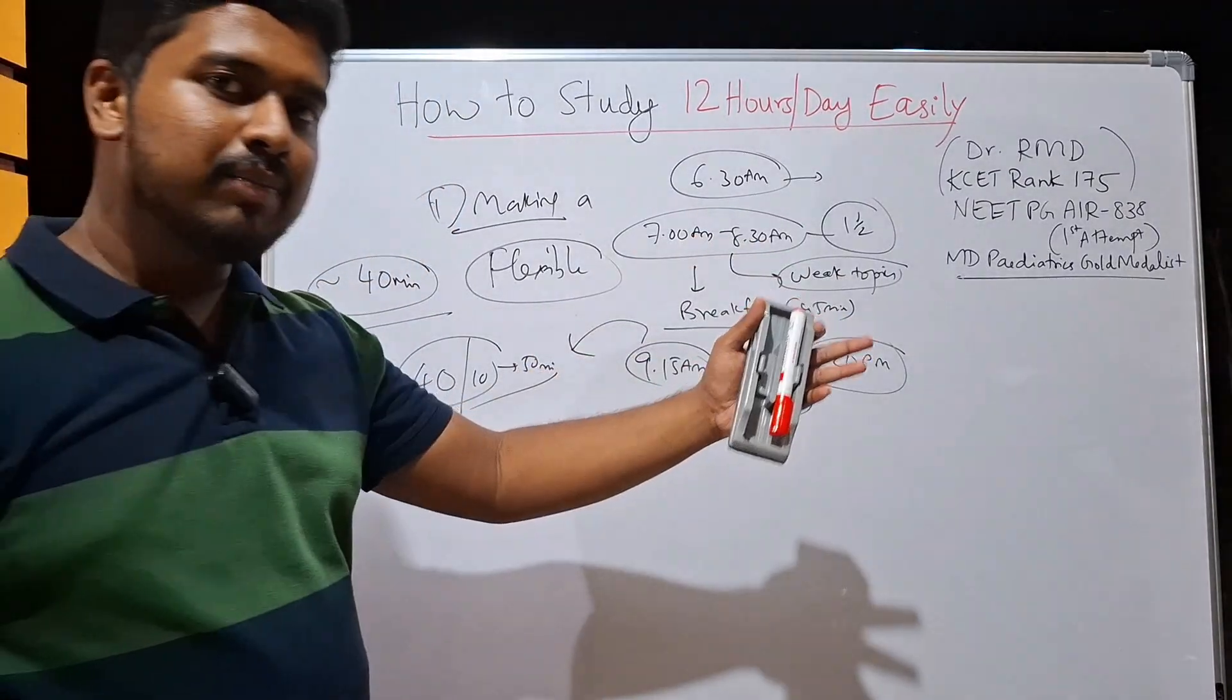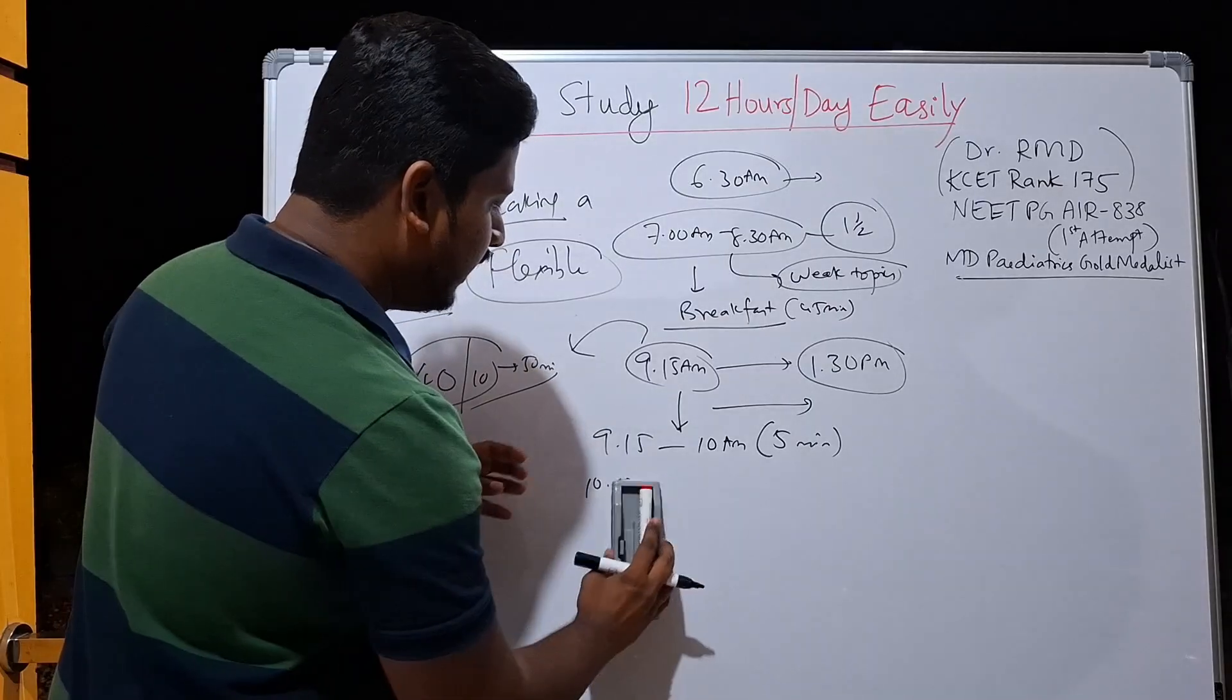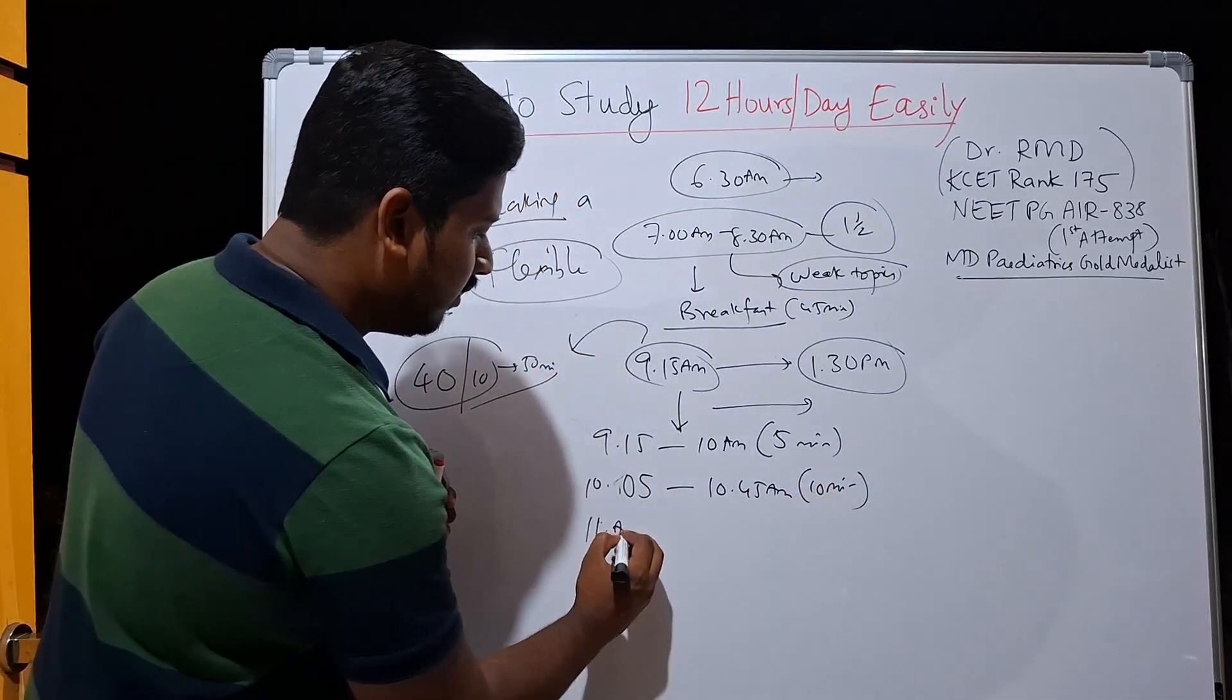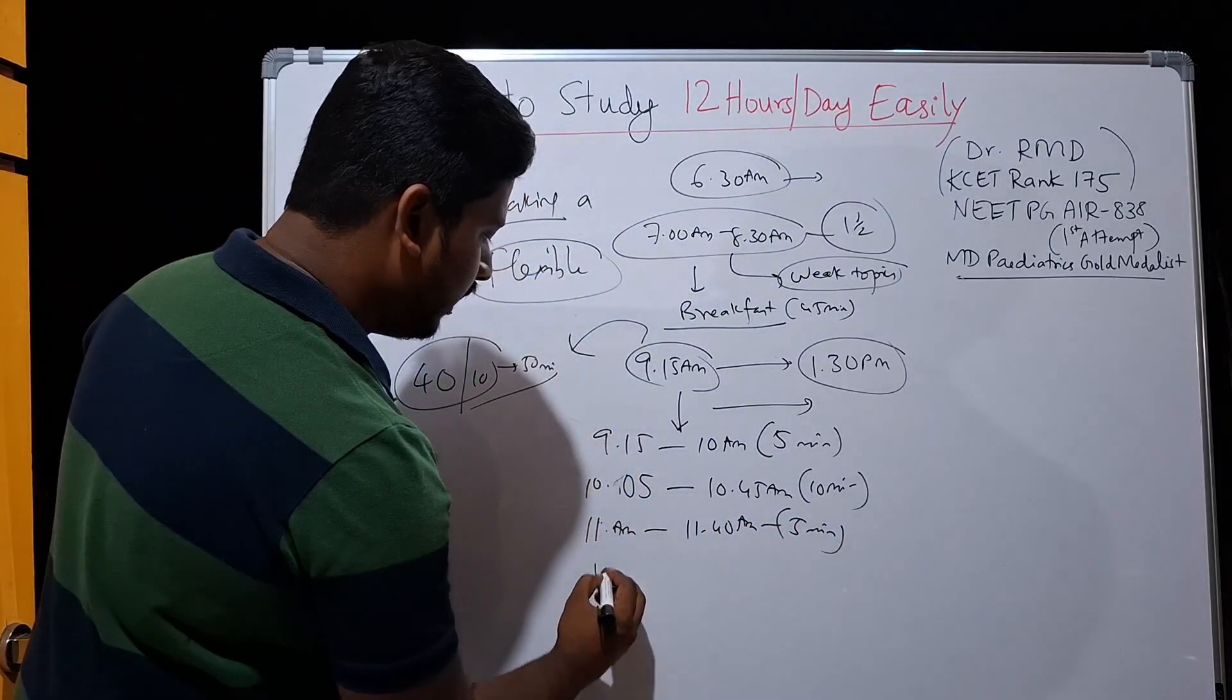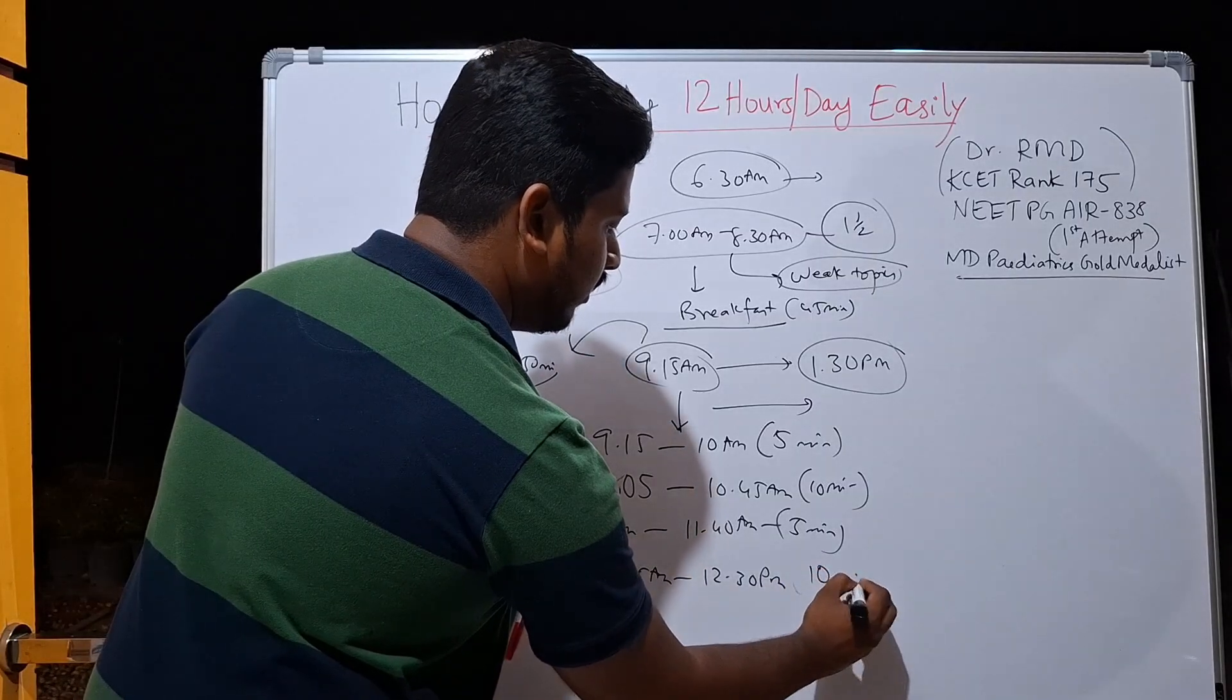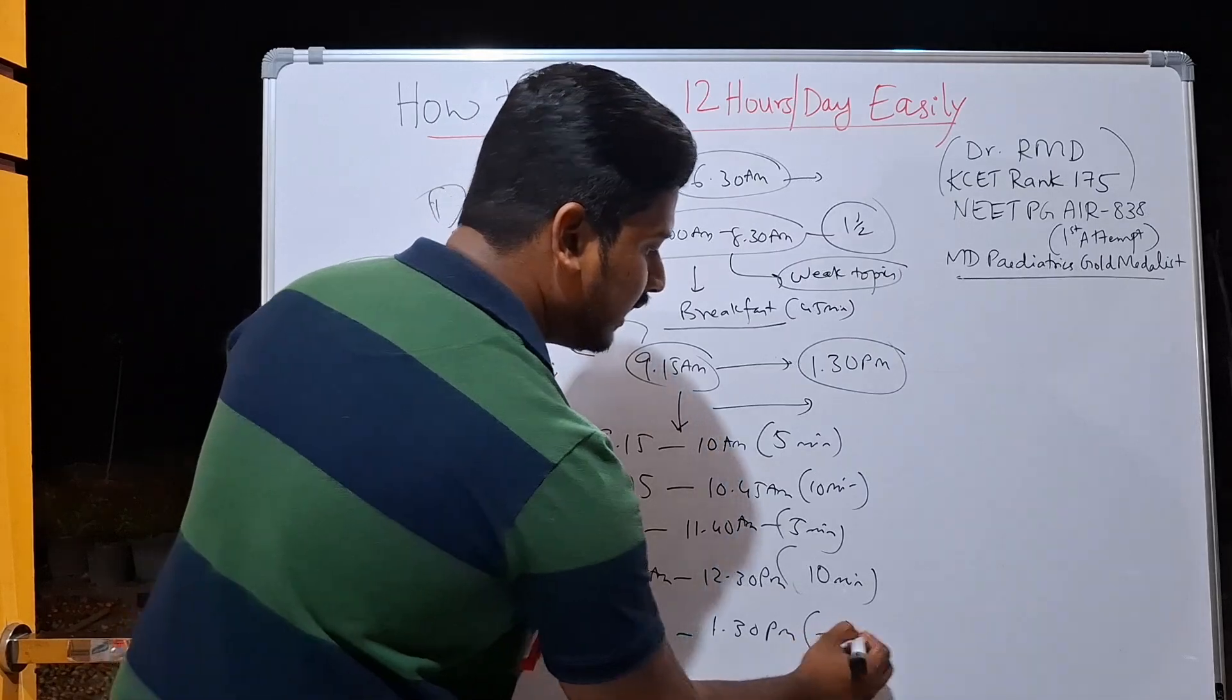So that means this 9:15 a.m. to 1:30 p.m. schedule will be divided into 9:15 to 10:00 a.m. with 5 minutes break, 10:05 a.m. to 10:45 a.m. with 10 minutes break, then 11:00 a.m. to 11:40 a.m. with 5 minutes of break, 11:45 a.m. to 12:30 p.m. with 10 minutes of break, and last is 12:40 p.m. to 1:30 p.m. with lunch later on.